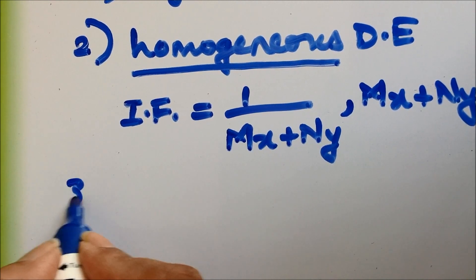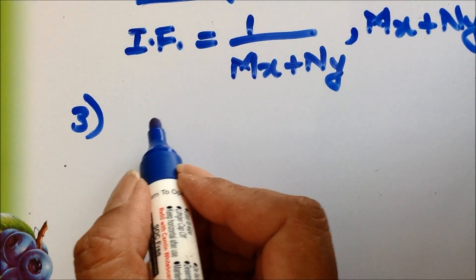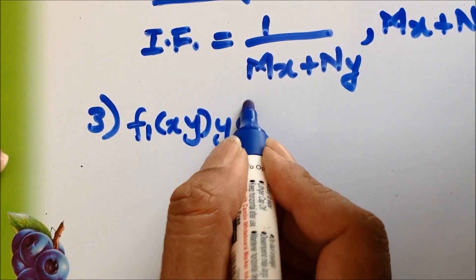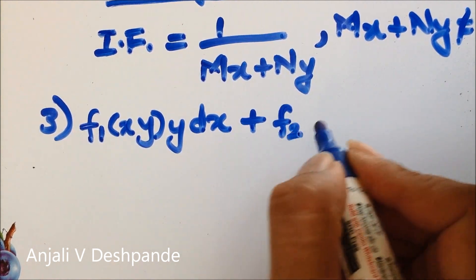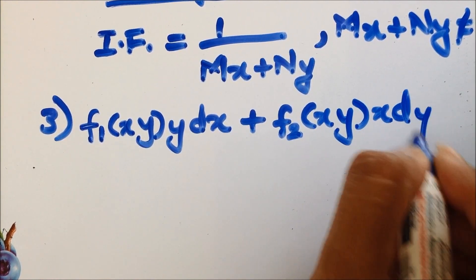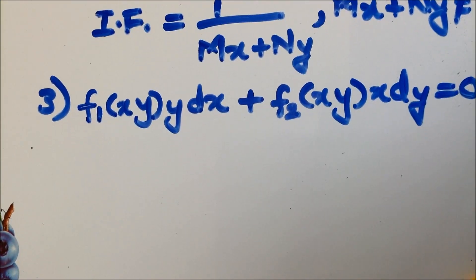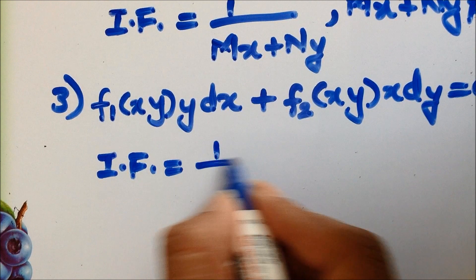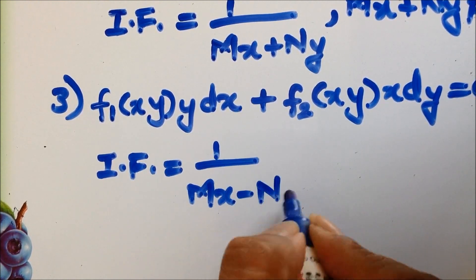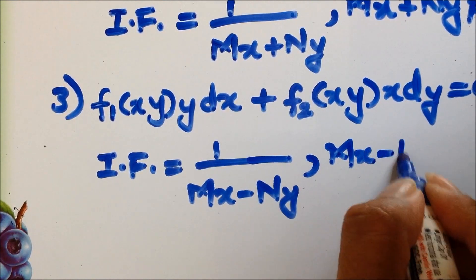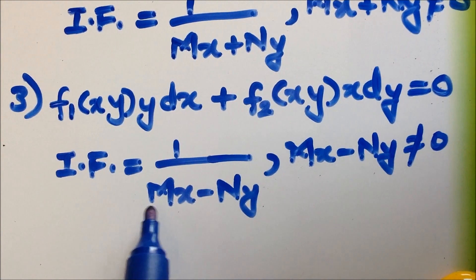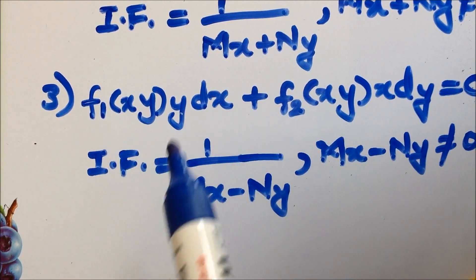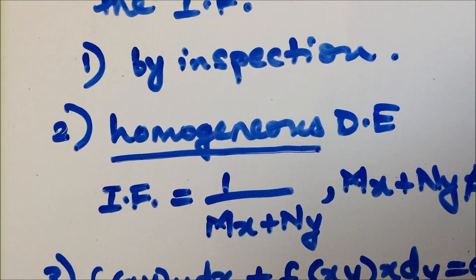For the third rule, suppose the equation is of the type F₁(xy)·y dx plus F₂(xy)·x dy equals 0. In this particular case, the integrating factor is given by 1 upon (Mx minus Ny), where Mx minus Ny should not be equal to 0. In this type of equation, you can take y common in the first term and x common in the second term, rewrite the equation, and that gives you the integrating factor.